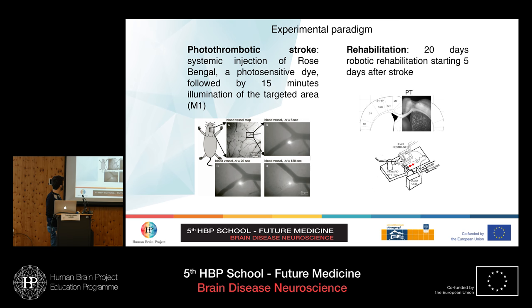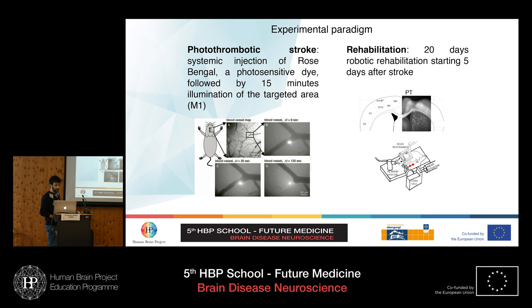The experimental paradigm is straightforward. We induce stroke by a systemic injection of rose bengal, a photosensitive dye, and then illuminate the targeted area for 15 minutes. This dye clots when illuminated, allowing a very precise stroke — you can clot a single blood vessel with the laser beam, as visible after 120 seconds of illumination. We illuminate the entire motor cortex area. After the stroke, starting five days later, we perform 20 days of rehabilitation sessions.